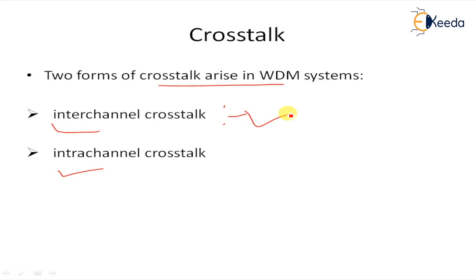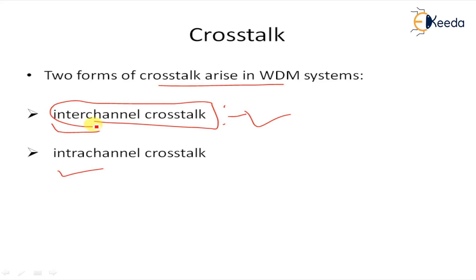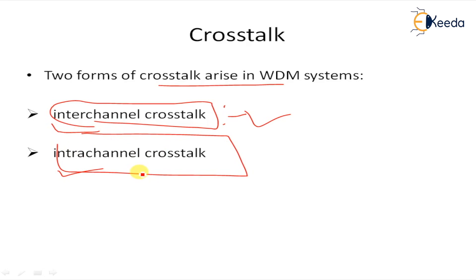When a cross-talk signal is at a wavelength sufficiently different from the desired signal wavelength — such that the difference is larger than the receiver's electrical bandwidth — this is known as inter-channel cross-talk. When the cross-talk signal is at the same wavelength as the desired signal, or sufficiently close that the difference falls within the receiver's electrical bandwidth, this is known as intra-channel cross-talk, or sometimes coherent cross-talk.